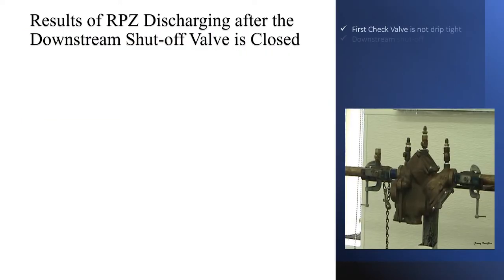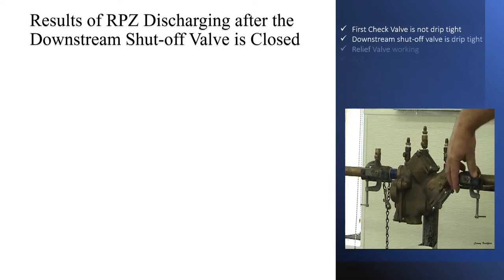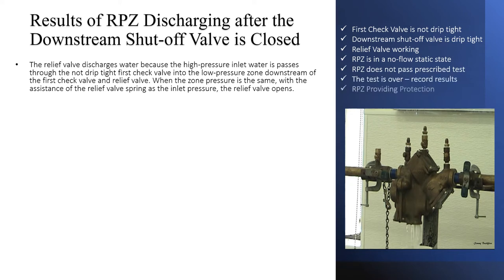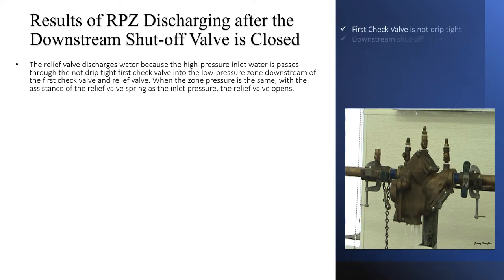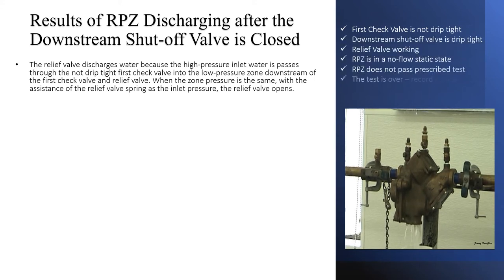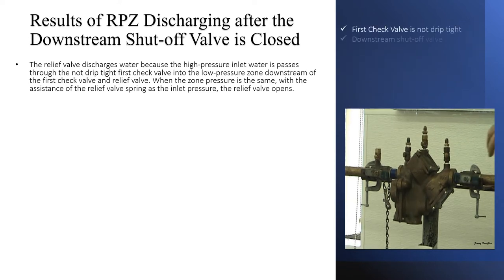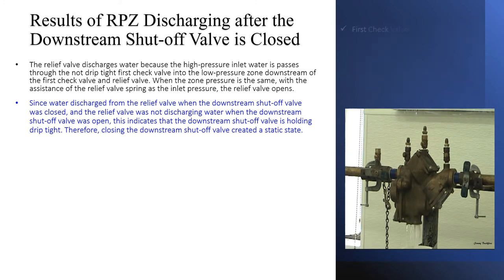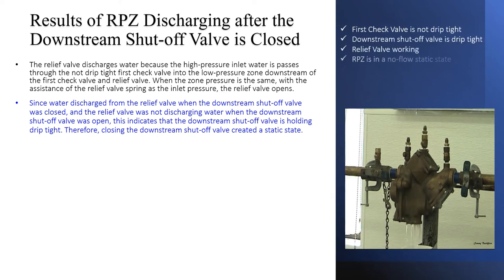The results of the RPZ discharging after the downstream shutoff valve is closed. The relief valve discharges water because the high pressure inlet water is passing through the not-drip-tight first check valve into the low pressure zone downstream of the first check valve and relief valve. When the zone pressure equals the inlet pressure with the assistance of the relief valve spring, the relief valve opens. Since water discharged from the relief valve when the downstream shutoff valve was closed, and the relief valve was not discharging when the downstream shutoff valve was open, this indicates that the downstream shutoff valve is holding drip tight.